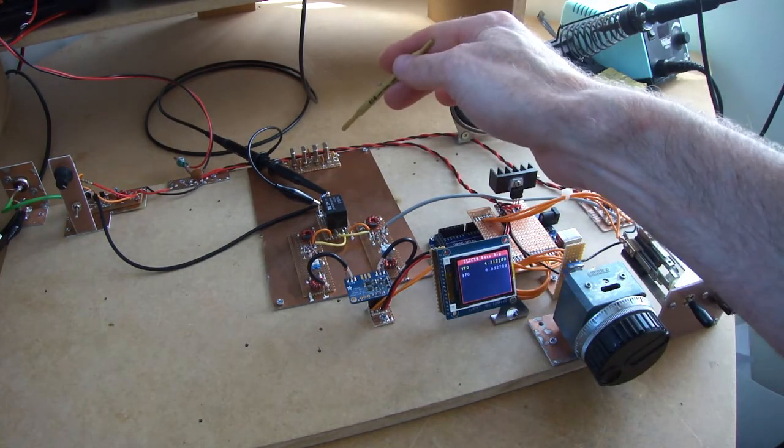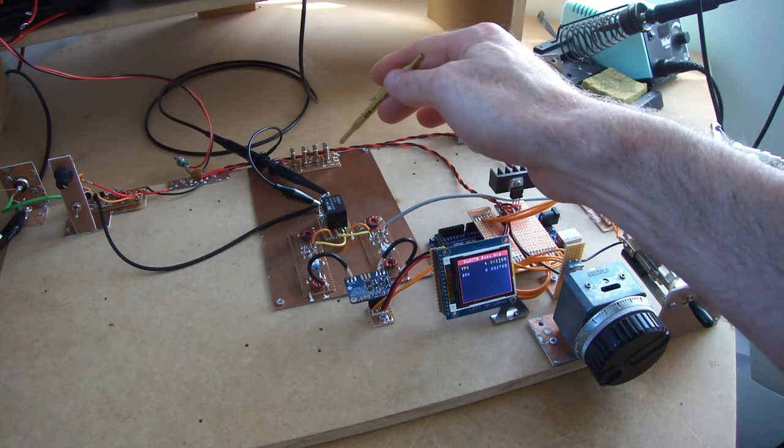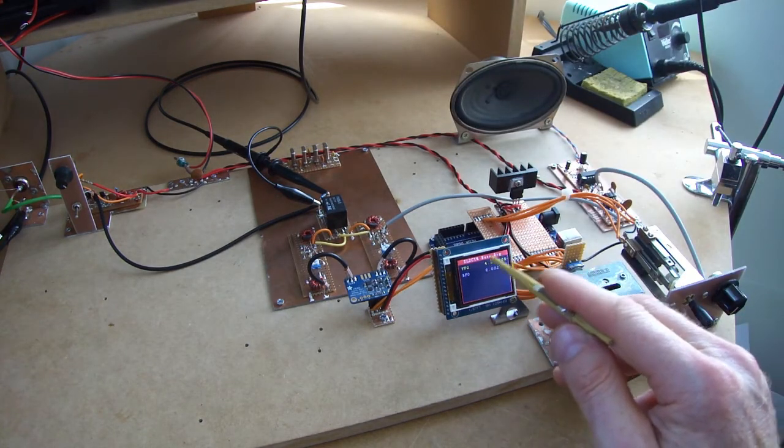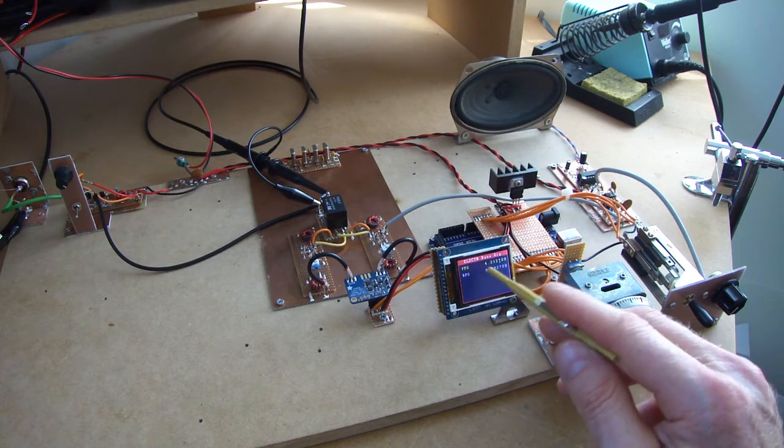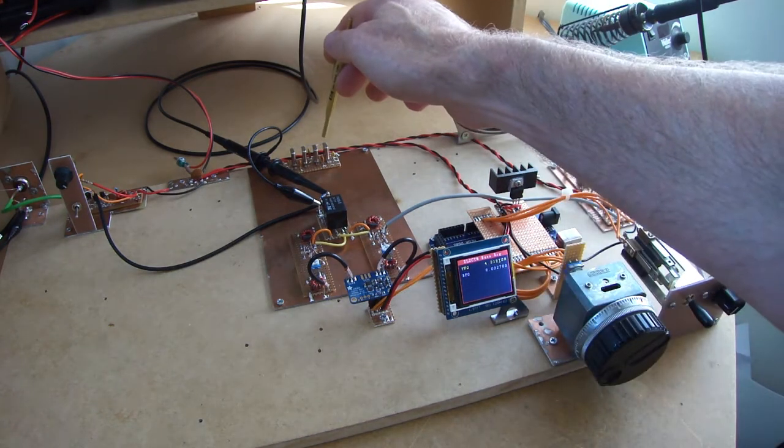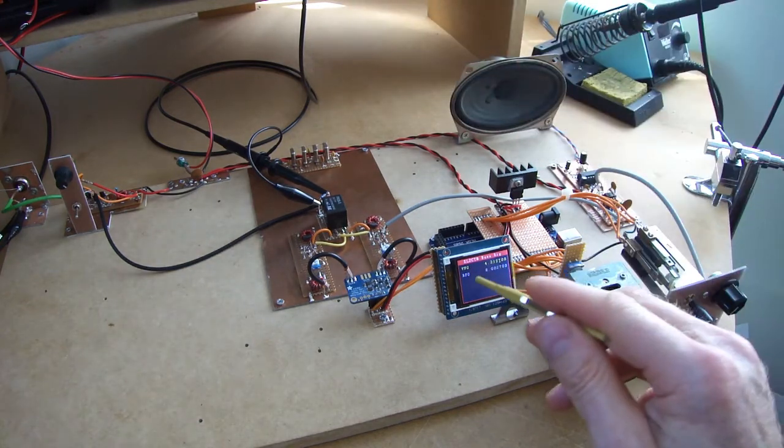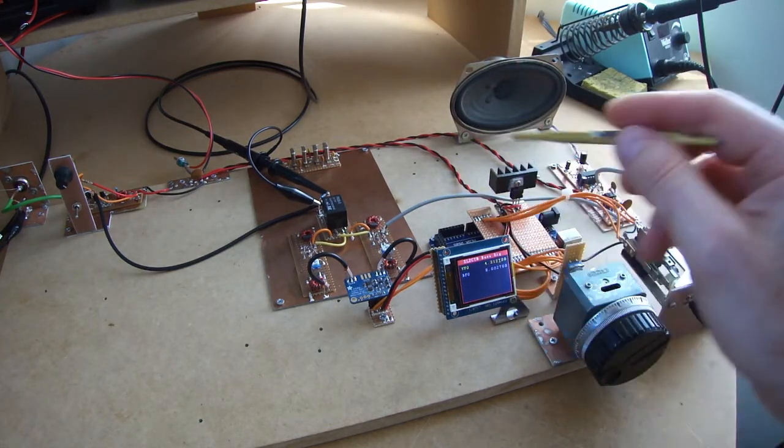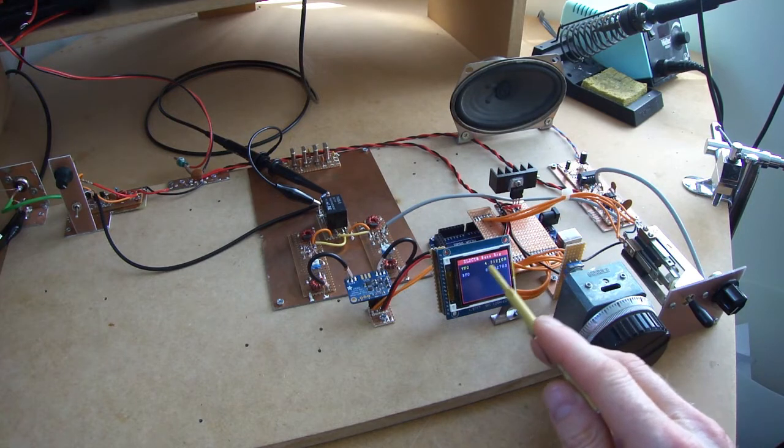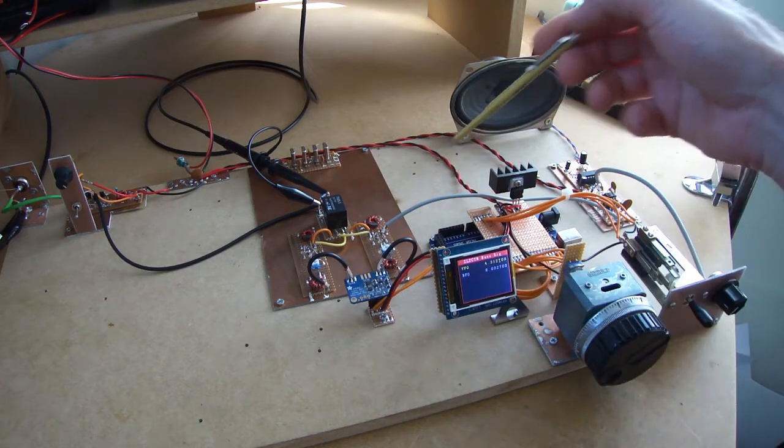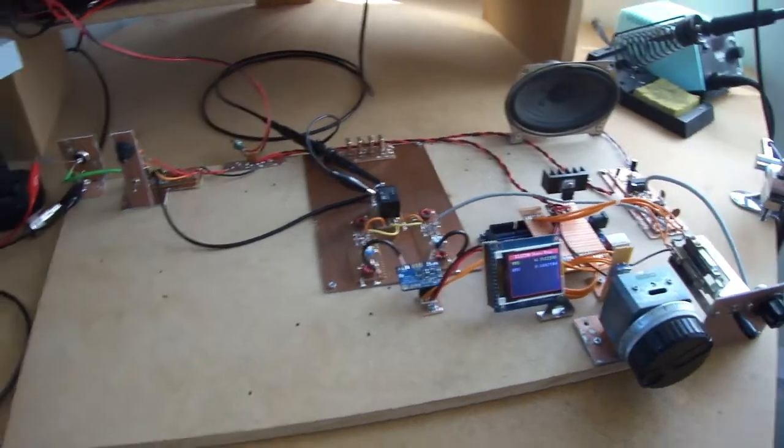And like I say, when we do transition to the single conversion then we'll need to tailor our VFO and our BFO frequencies to suit the characteristics of that ladder crystal filter there. So that's why I've got this test software. Once that's up and running and we've identified exactly what the frequencies need to be then I'll go back to my normal software and just insert those values behind the scenes in the code. But anyway,